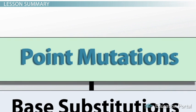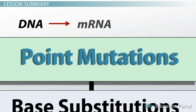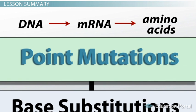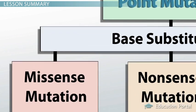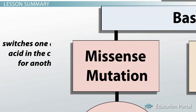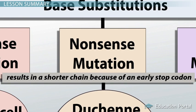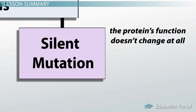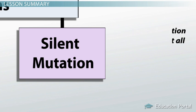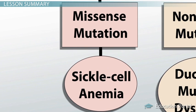Point mutations can cause serious changes to an organism if they change the way a protein works. A mutation in DNA alters the mRNA, which in turn can alter the amino acid chain. A base substitution may have three different effects: a missense mutation, which switches one amino acid for another; a nonsense mutation, which results in a shorter chain due to an early stop codon; and a silent mutation, in which the protein's function doesn't change at all. Base substitutions are responsible for disorders like sickle cell anemia, caused by a missense mutation, and Duchenne muscular dystrophy, caused by a nonsense mutation.